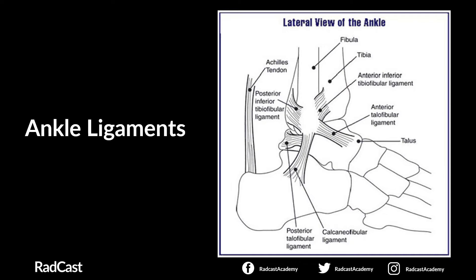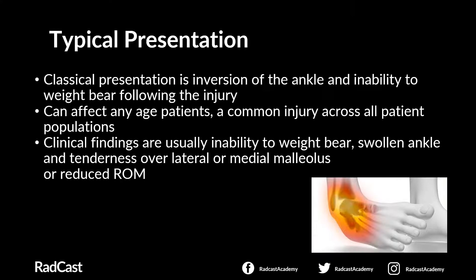The ankle joint is supported by many different ligaments and soft tissue structures. Some of the most important ones are shown on the slide. The most commonly injured ones are the anterior talofibular ligament and the calcaneofibular ligament. Those are most commonly injured in what we call an ankle sprain. You can see the anterior talofibular ligament extending anteriorly from the lateral malleolus, and the calcaneofibular ligament also originating from the lateral malleolus and travelling towards the lateral side of the calcaneus. Those are the most common ligamentous injuries of the ankle.